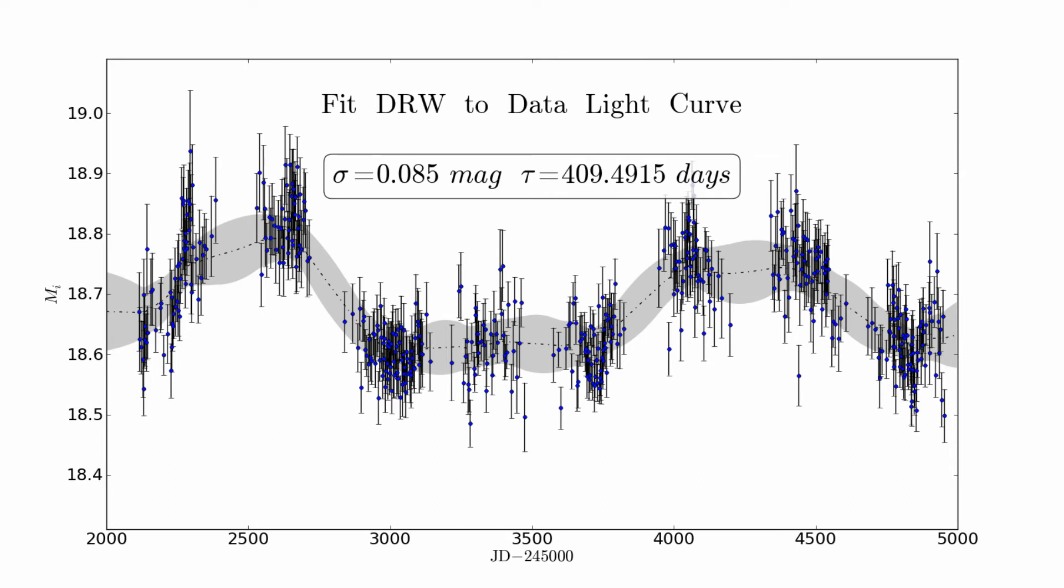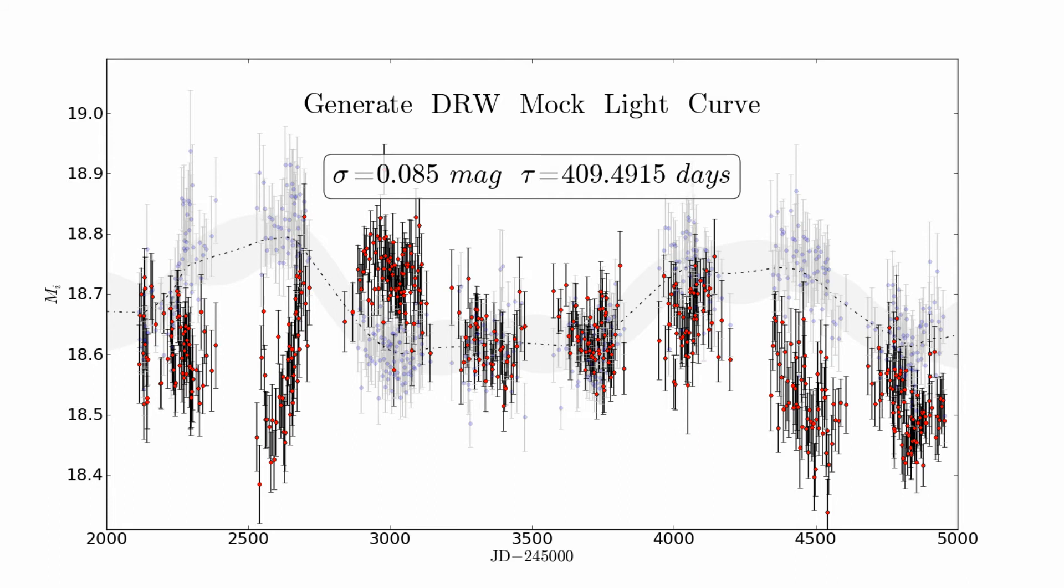For each light curve, we derive its best-fit DRW parameters and then generate a mock light curve, so that we have a mock sample which is completely consistent with the DRW model on all timescales.